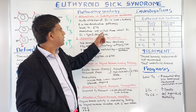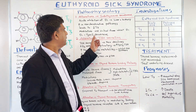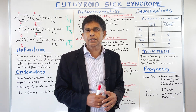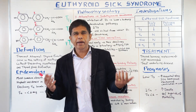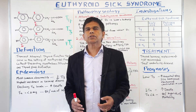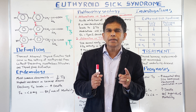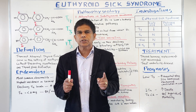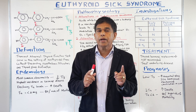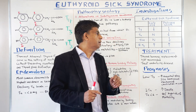Some medications in critical illness also inhibit D1 — type 1 deiodinase. Those medications include steroids, beta-blockers, amiodarone, PTU, free fatty acids, and selenium deficiency. Selenium and thyroid always have a relationship — that's why when somebody has hypothyroidism, we supplement with selenium.